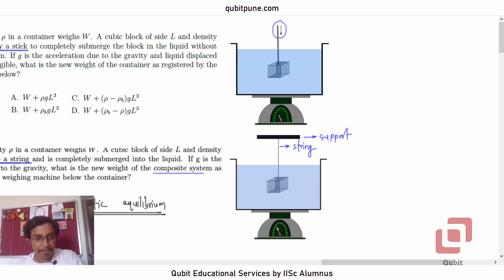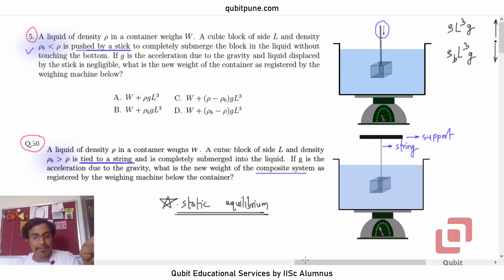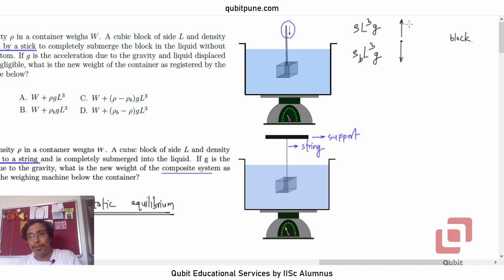Let us suppose that this is the block. First of all, its weight will act vertically downwards. So the magnitude will be ρ_B L³ g. And what will be the buoyant force? The buoyant force will act in this direction. What will be its magnitude? ρ L³ g. Now, because ρ is greater than ρ_B in the first case, the buoyant force dominates the weight. So it needs to be pushed downwards. So let us call that force as F. That is for the block.